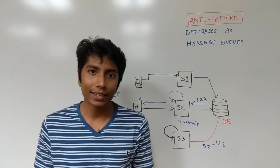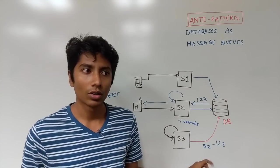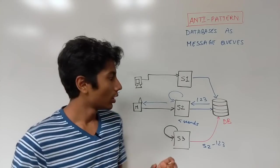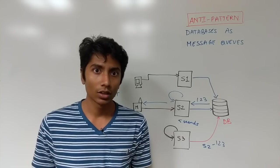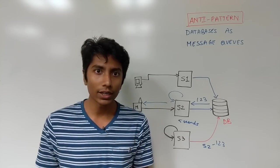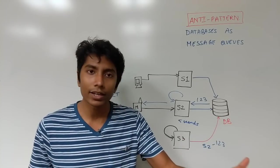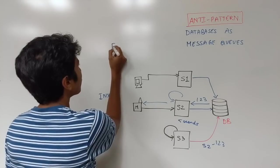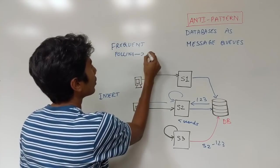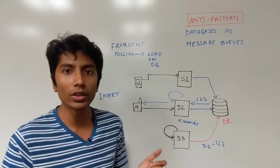But why is this an anti-pattern? One thing is the polling interval that we just talked about. That's a problem. When you're polling a database, you're actually doing a lot of read operations on it. And if you're polling it very frequently, you're putting a lot of load on the database, continuously asking, do I have any new messages for me? So if you have frequent polling, that means there's a lot of load on the database.